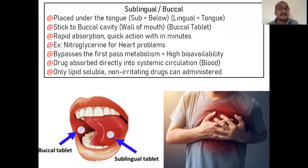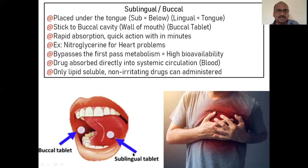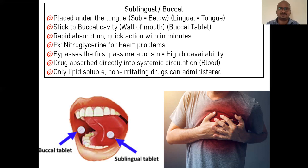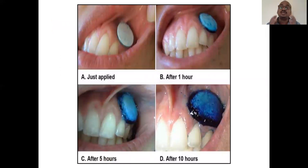Sublingual or buccal tablets are very important in cases of heart attacks. Nitroglycerin is kept under the tongue for heart problems. Sub means below, lingual means tongue — so below the tongue. Buccal tablets adhere to the buccal cavity. Sublingual and buccal are excellent routes — they bypass first-pass metabolism and the drug directly enters systemic circulation. Only lipid-soluble, non-irritating drugs can be administered through this route. Instead of swallowing, absorption is restricted to this area for quick action.